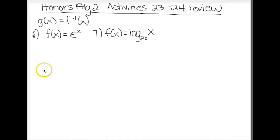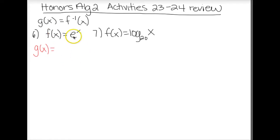We also know that the base of the exponential has to match the base of the logarithm. So when I write g of x, the logarithm that has base e is ln. Since my exponent is x, that has to be my input value. So simply, g of x equals the natural log of x.